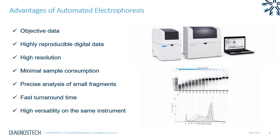This brings us to some of the advantages of an automated electrophoresis system such as the TapeStation. It generates objective data measured against markers and ladders of known concentration and size, and produces highly reproducible digital data. The systems enable very high resolution separation between fragments, down to a single digit of base pairs. Only minimal sample consumption is required — about 1 to 2 microliters of your precious sample — allowing precise analysis of very small fragments. Both systems have a very fast turnaround time, taking less than 1 minute per sample analysis, and provide high versatility on the same instrument, enabling measurement of multiple different parameters and different sample types.